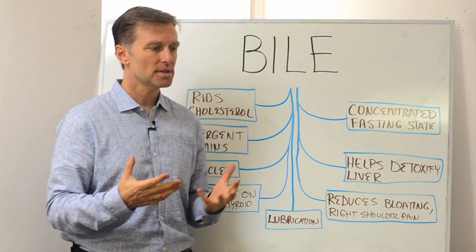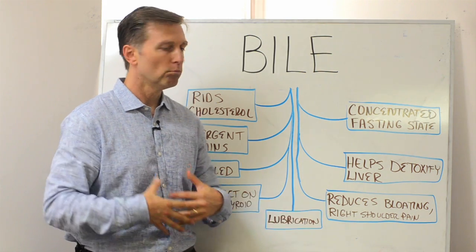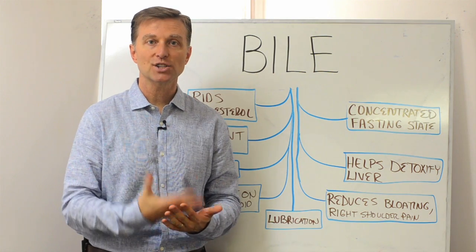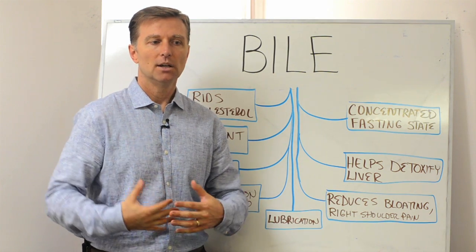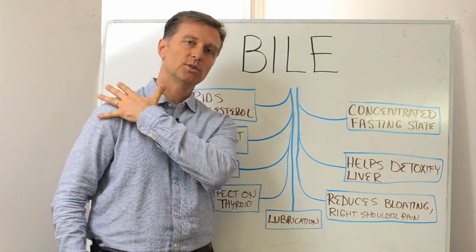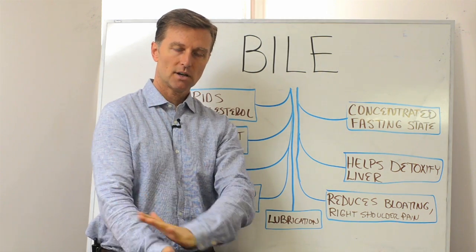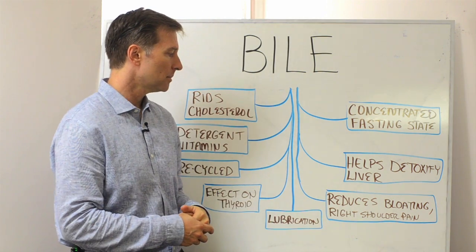Here's kind of the typical symptoms of bile would be bloating, nauseous, bloating on the right side, right shoulder pain, neck stuff to headaches. It can even cause the whole right arm to have a problem.